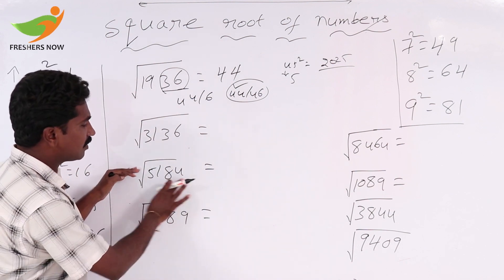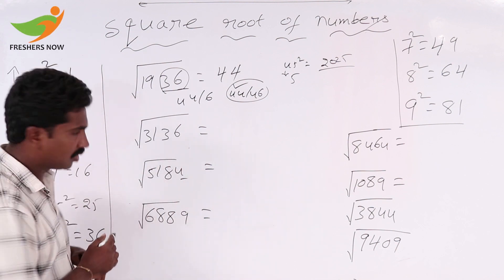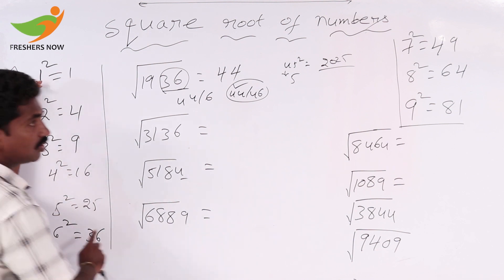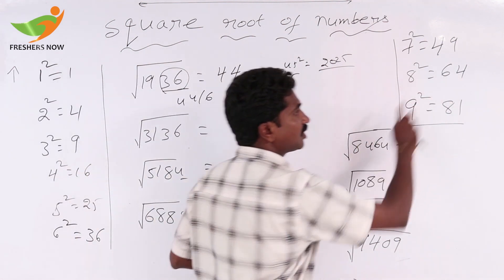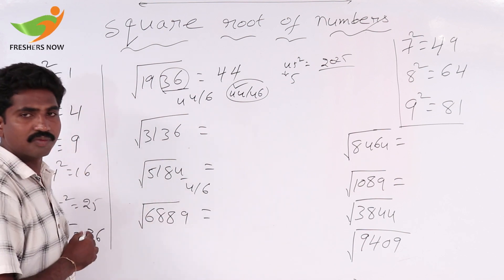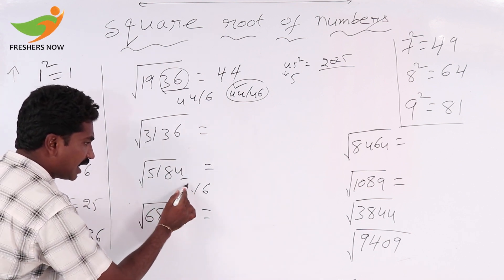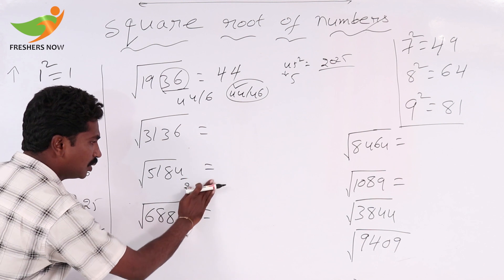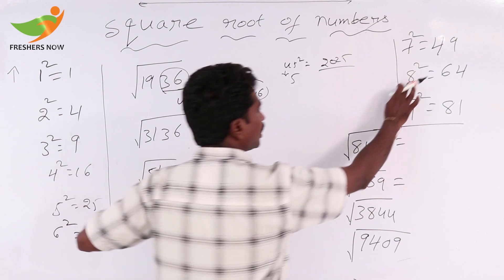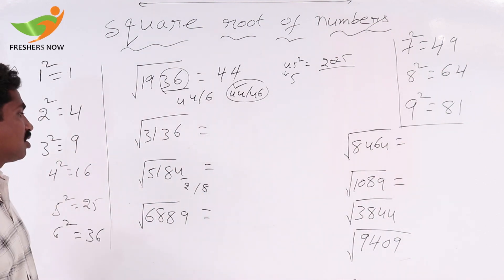If you take the square root of 5184, the units place value is 4. Observe: 2 squared is 4 and 8 squared is 64. So at the units place value, we can take either 2 or 8.